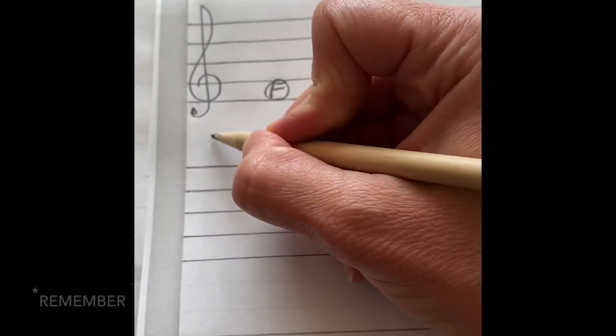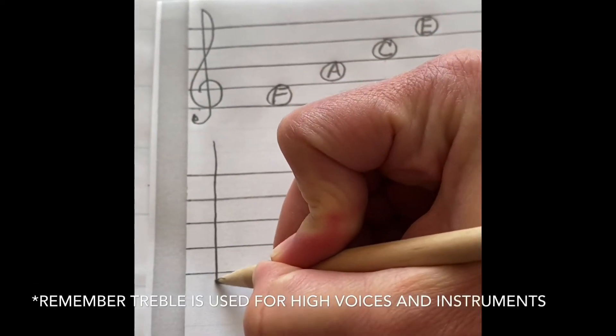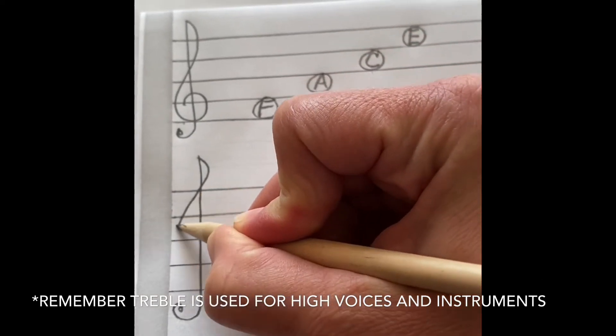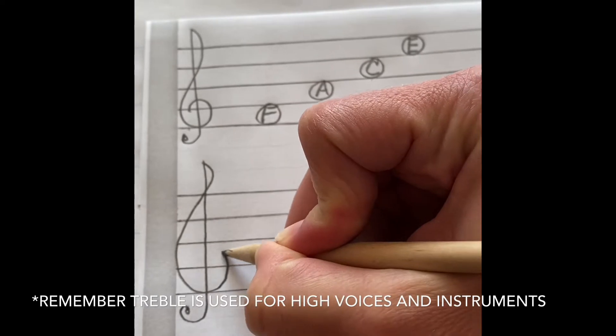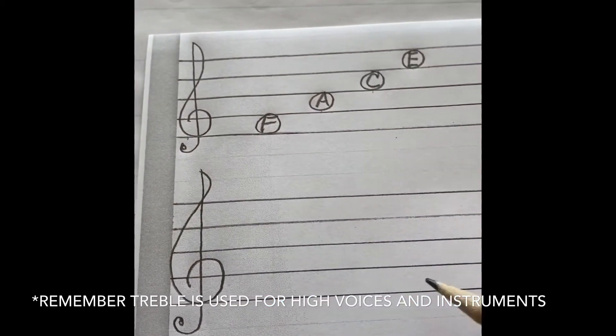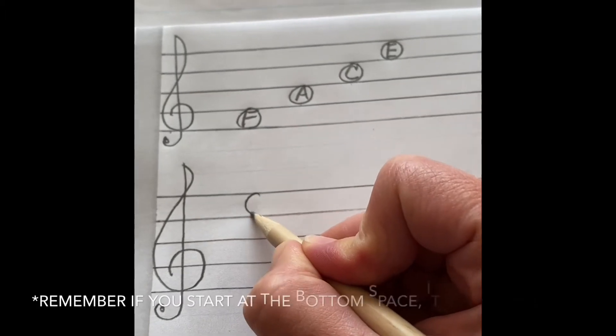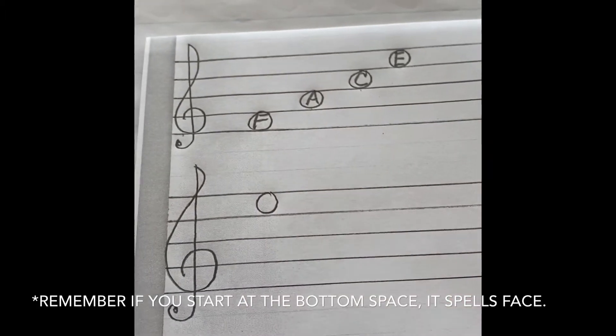Now I'm making another treble clef sign on the staff below. I'm going to do a different order of the space notes. I'm going to start at the very top space, and we know that top space is E.